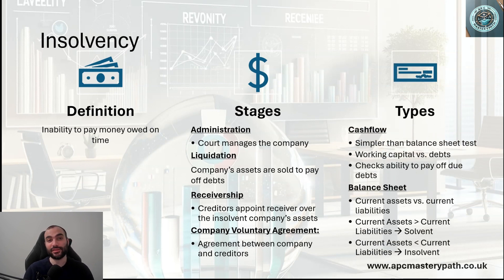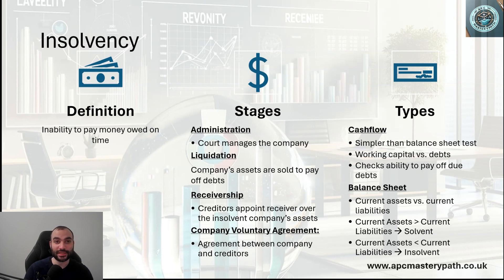Insolvency has two types: cash flow and balance sheet. The balance sheet insolvency is concerned with the amount of debts compared to the current assets — if the current assets are more than the current liabilities, the business is solvent; otherwise, the business is insolvent. Cash flow insolvency, on the other hand, is concerned with working capital compared to the debts.